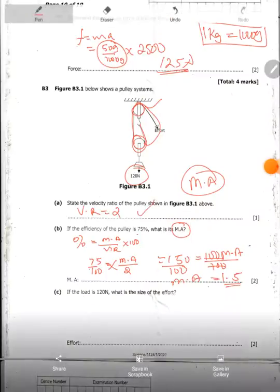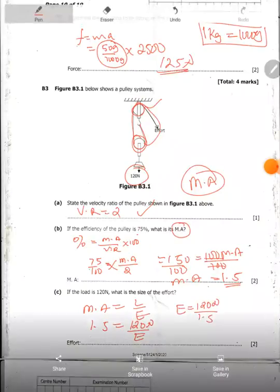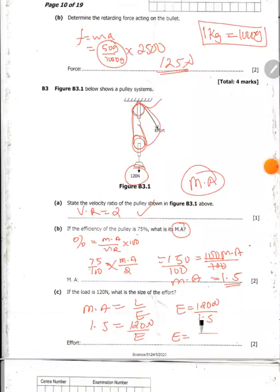They are saying, if the load is 120 newtons, what is the size of effort? Now we know that mechanical advantage is equal to load over effort. Mechanical advantage is 1.5. The load is 120 newtons. So in this case, effort is equal to 120 newtons divided by 1.5. So 120 divided by 1.5, you get 80. So the effort is equal to 80 newtons.